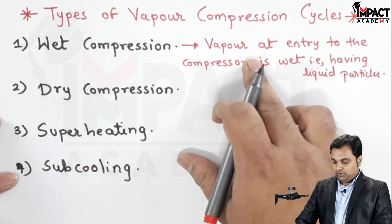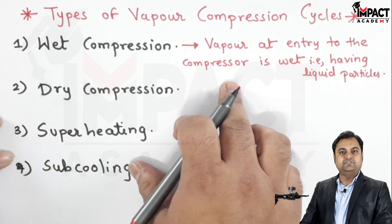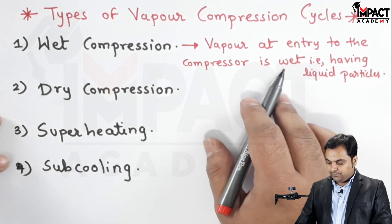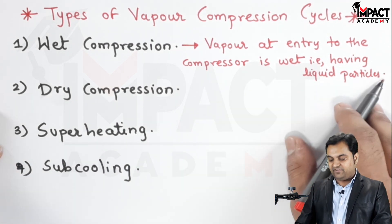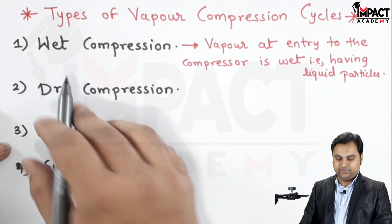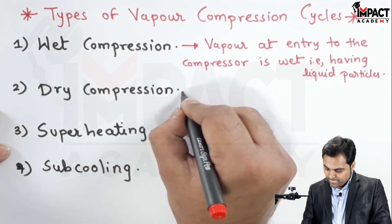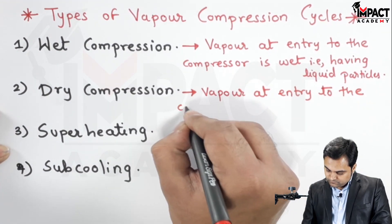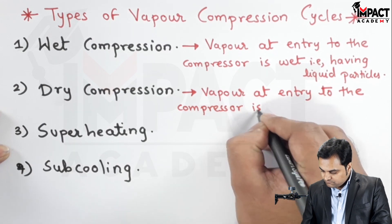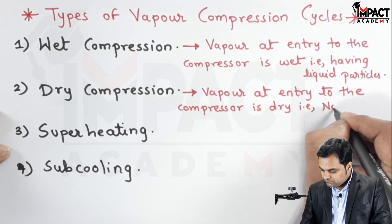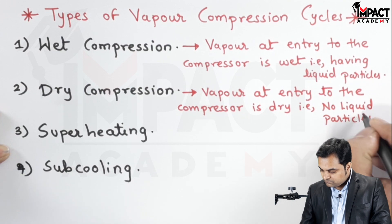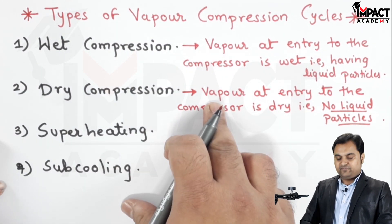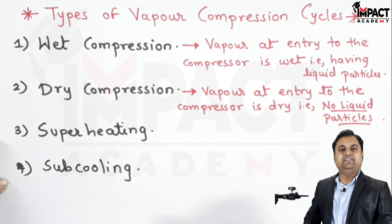In wet compression, the vapor at the entry to the compressor — this vapor is the refrigerant vapor — is wet at entry to the compressor. It means it is having liquid particles, so it is called wet compression. In dry compression, the refrigerant vapor at entry to the compressor is dry.